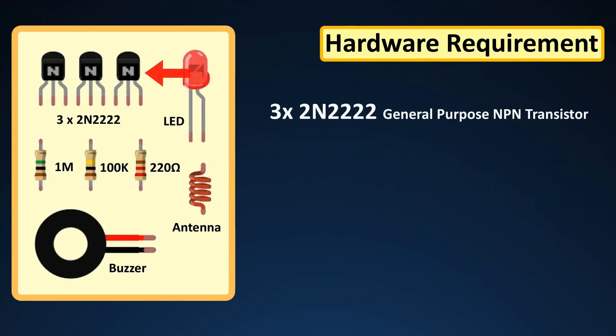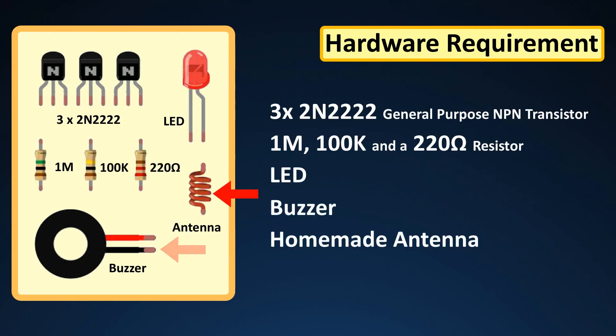For this setup we need three 2N2222 general purpose transistors, one 1-meg, one 100k and a 220 ohm resistor, LED, buzzer and a homemade antenna.